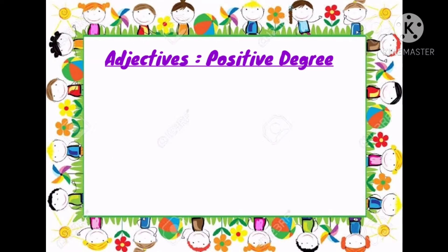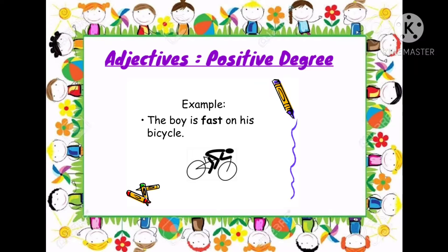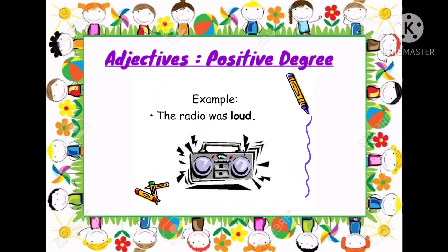For example, 'the house is big' — this sentence speaks about a particular house only and it is not comparing it with any other house; it is telling the quality of that house that it is big. So it is an example of positive degree. Second example: 'the boy is fast on his bicycle' — here also the sentence speaks of a particular boy, not comparing it with any other boy. And the third example: 'the radio was loud' — radio is not being compared with any other radio; its quality is being mentioned that it was loud.